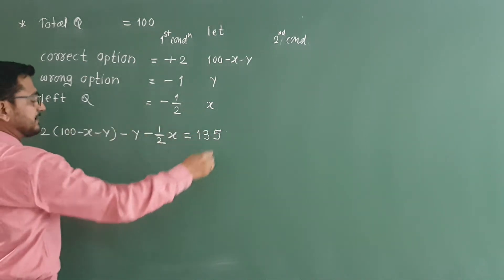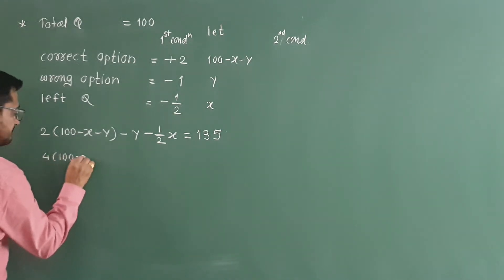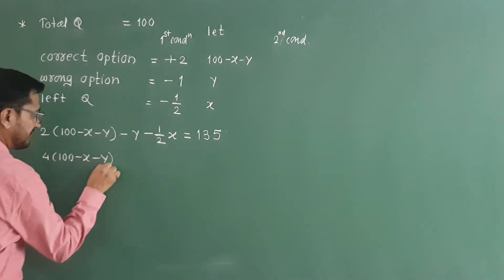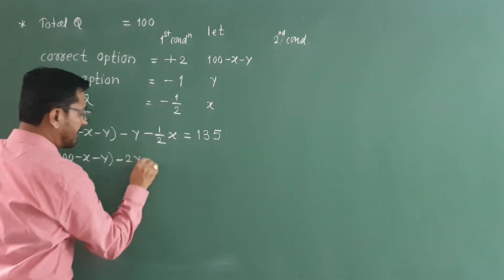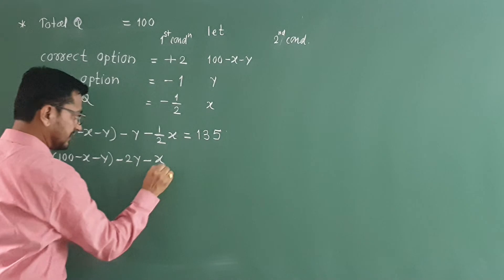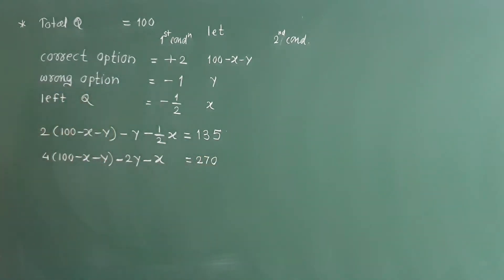So multiply both sides by 2. We get 4 in bracket 100 minus x minus y minus 2y, which is multiplied, minus 2 to get cancelled, remaining is x, is equal to 270.